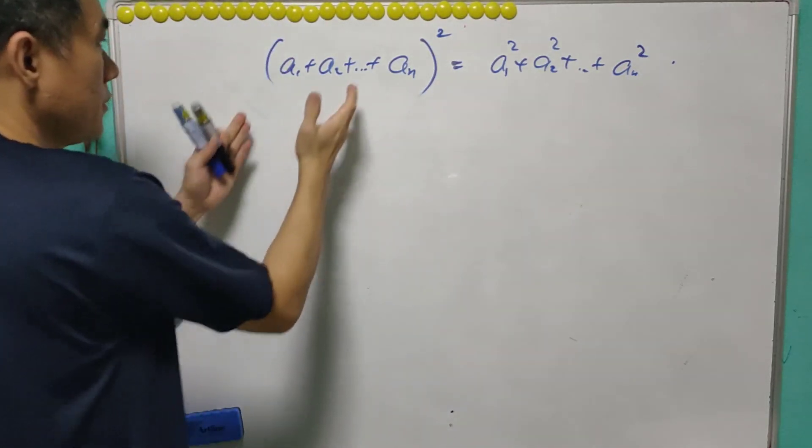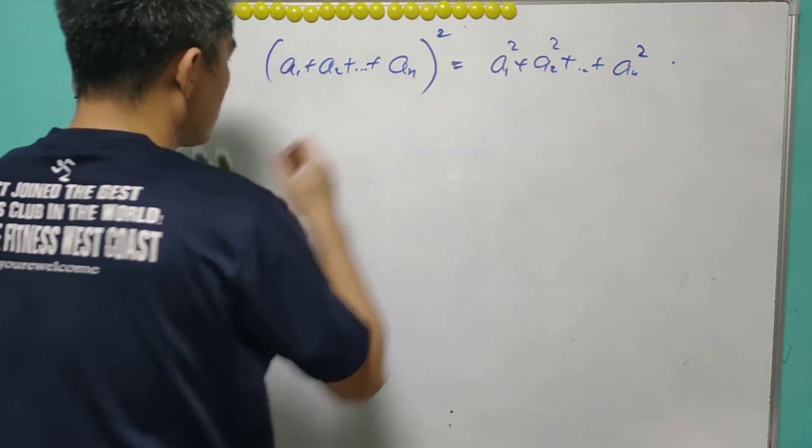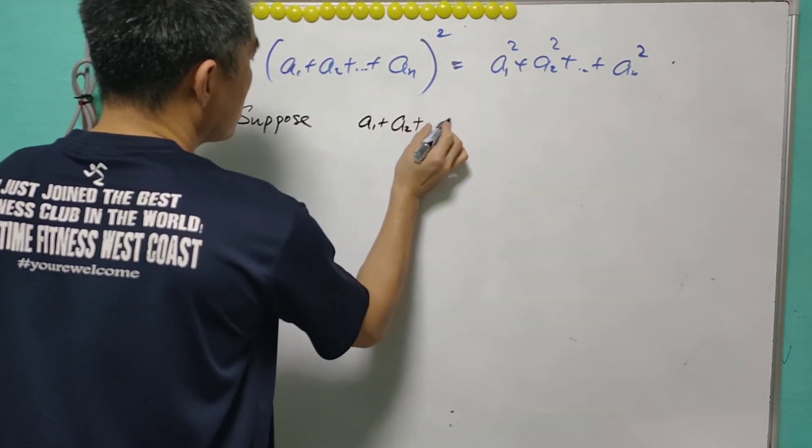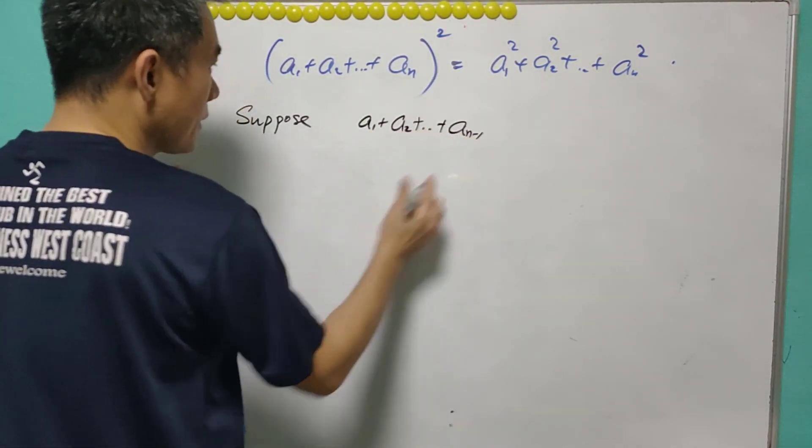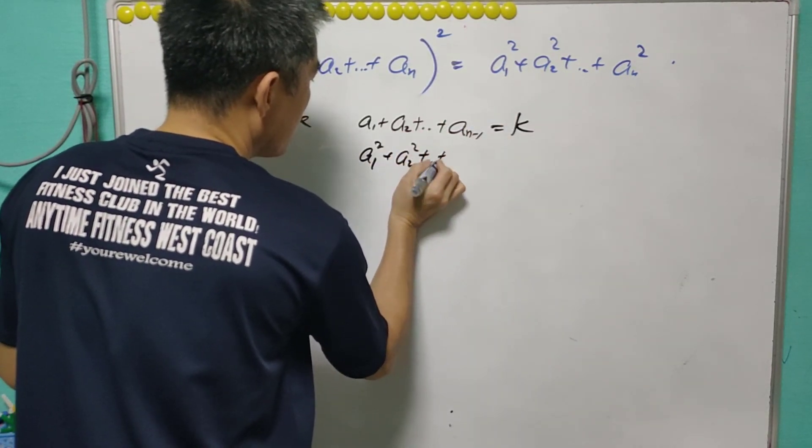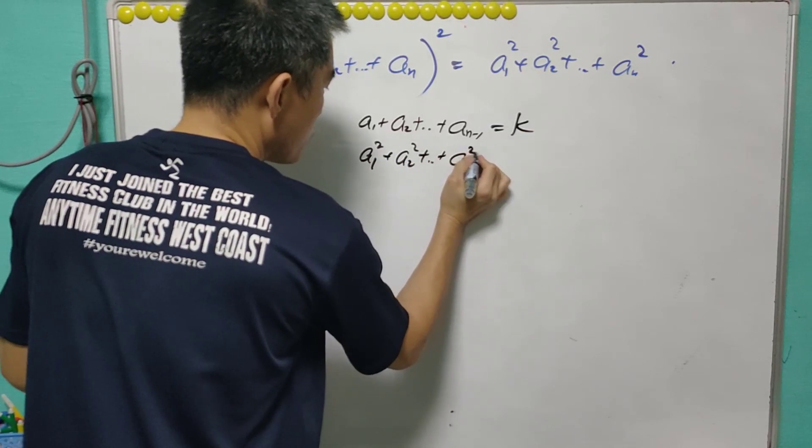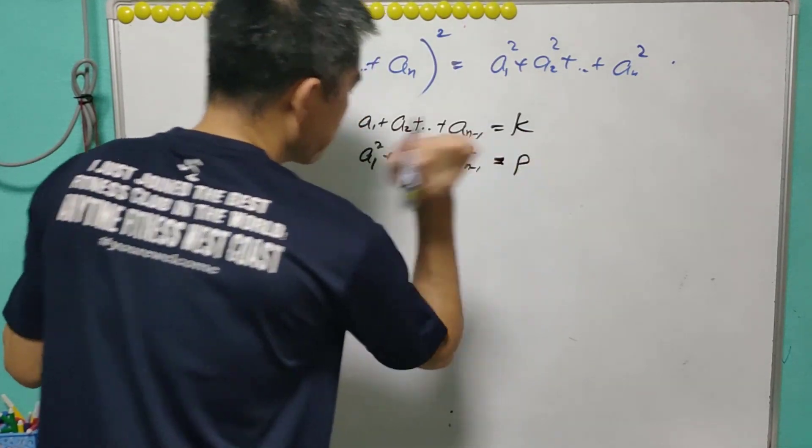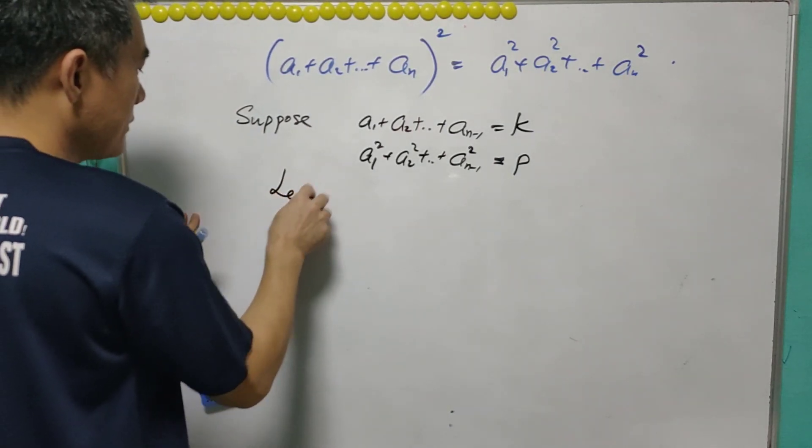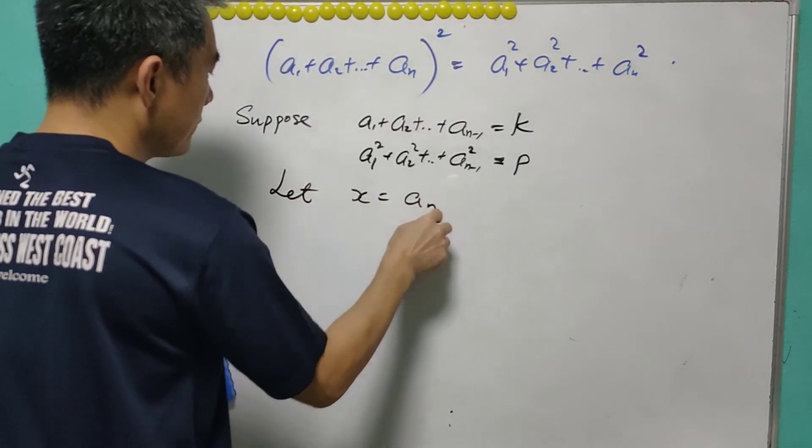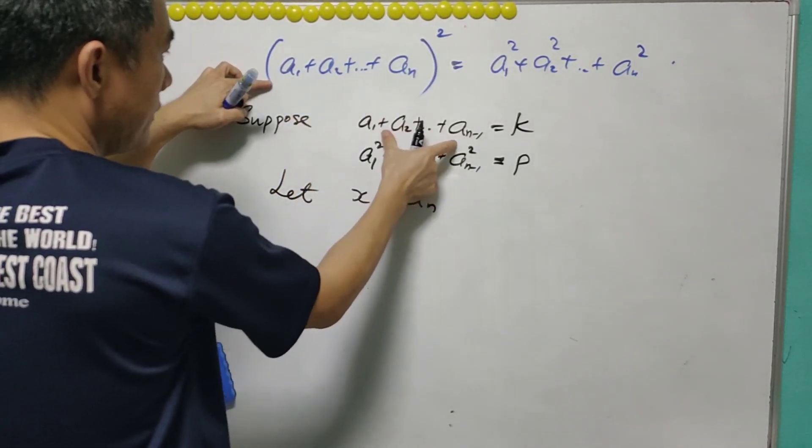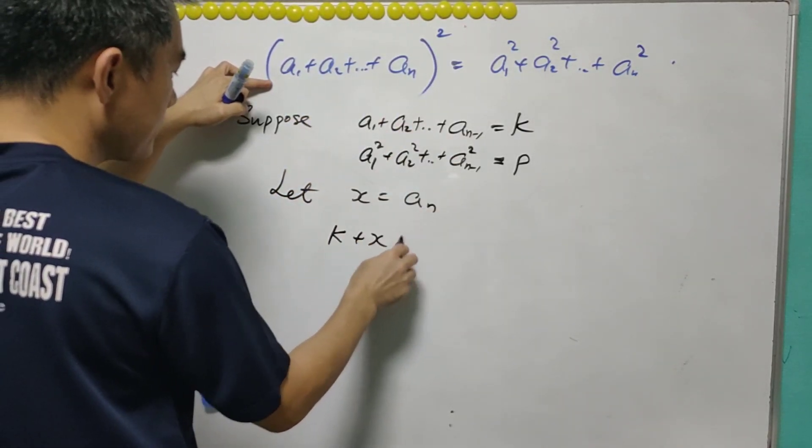So we will find another way to get the condition so that this is true. Suppose that a1 plus a2 all the way to an minus 1 is equal to k. A1 square plus a2 square all the way to an minus 1 square equals to p. If we want this to happen, then we may let x to be an and find what is the value of x. So from the left hand side, it is equal to k plus x square.